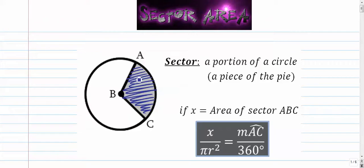To find the area of that, you're basically going to set up a proportion where x is the area divided by the total area of a circle, pi r squared.